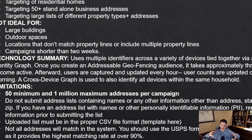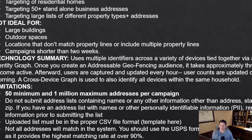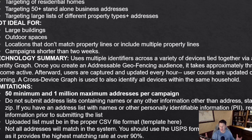What addressable geofencing isn't ideal for is large buildings. It captures the property line of an address, so for a high-rise or large apartment complex, you're capturing the whole property. With drawn geofences, you can segment out specific portions of a large building. Outdoor spaces like parks or event spaces without clear addresses are better suited for drawn geofences, as are locations that don't match property lines clearly or include multiple property lines — such as newly built homes that haven't been fully addressed in the system.